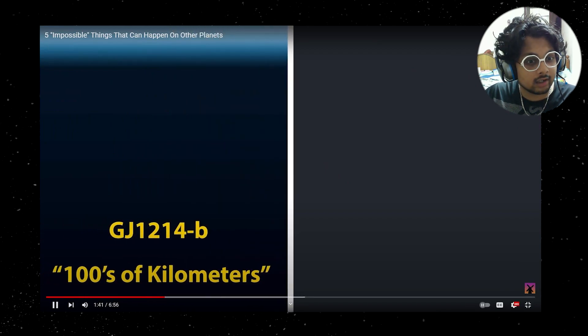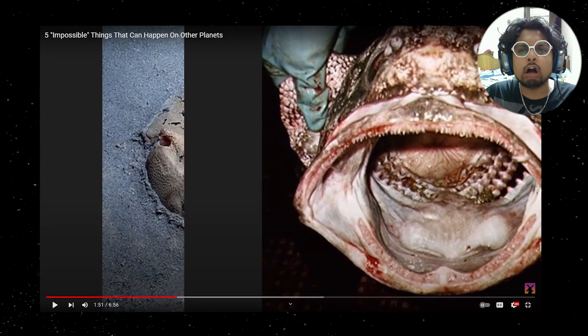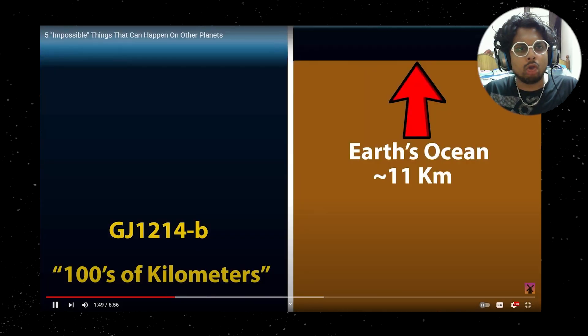On GJ 1214 B, 0.05% up to 10% of the planet's mass is... The entire planet would be covered in an ocean hundreds of kilometers deep. Our own ocean goes down only a mere 11 kilometers and we already have terrifying monsters like this.